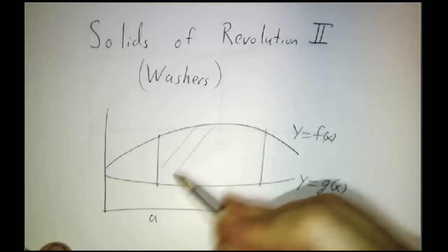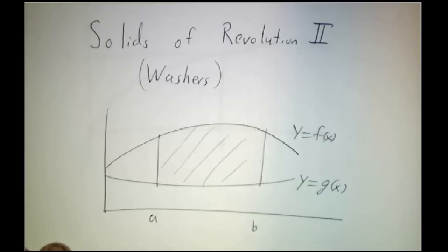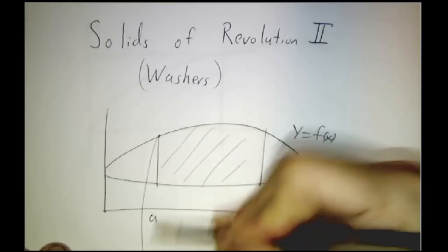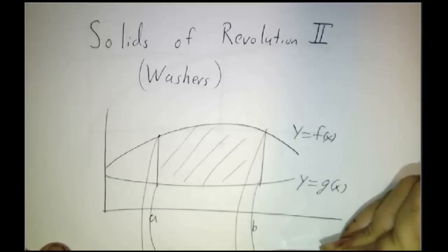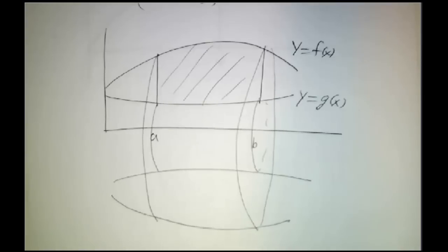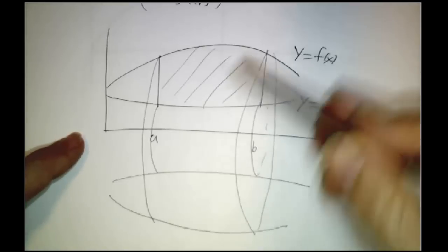And we want to take the region between x equals a and x equals b. So we want to take this region here and we want to spin it around the x-axis to get some sort of solid region. The question is what is the volume of the region that you get when you take this and you spin it around the x-axis?